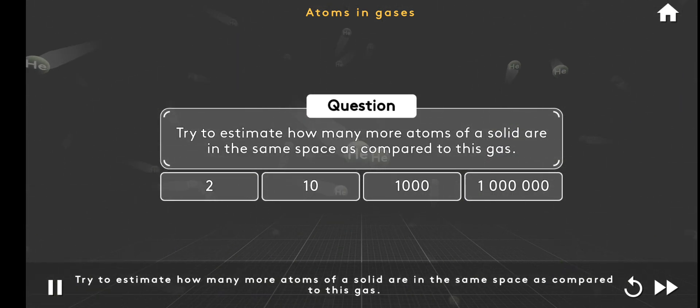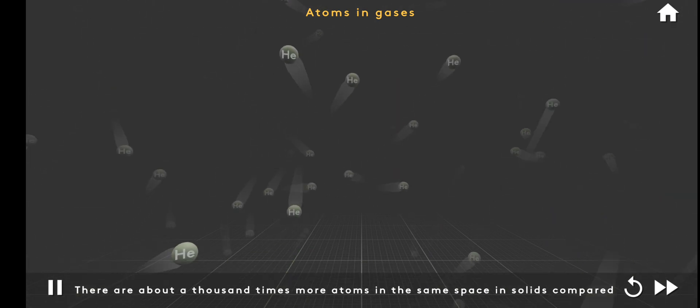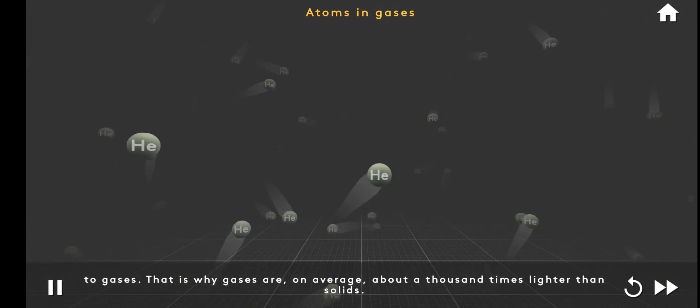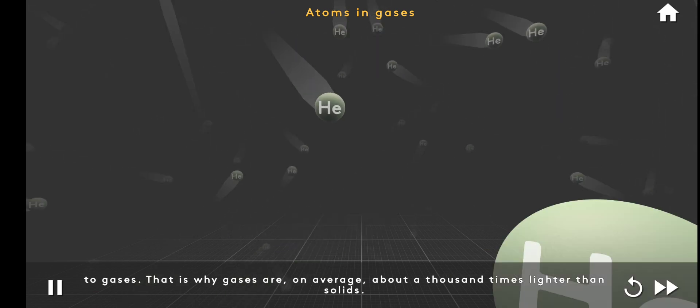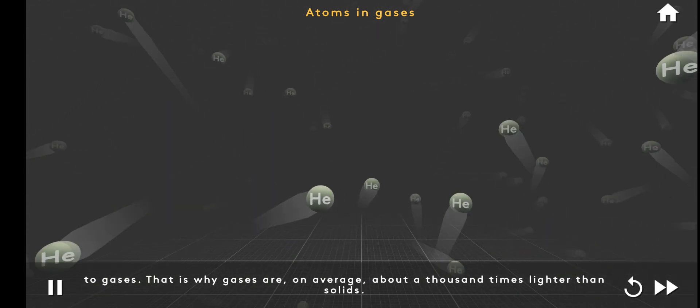Try to estimate how many more atoms of a solid are in the same space as compared to this gas. There are about a thousand times more atoms in the same space in solids compared to gases. That's why gases are, on average, about a thousand times lighter than solids.